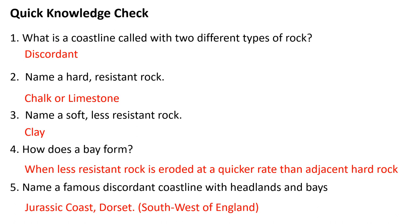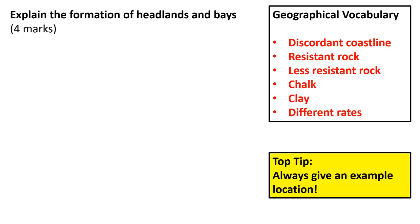Now let's look at what the exam question would look like. It's likely to be a four-mark question such as: 'Explain the formation of headlands and bays.' This question is not asking you to analyze, evaluate, or assess — it just wants you to describe and explain a process. Process questions are often four marks because there are usually four things to say, and we want to use geographical vocabulary where we can.